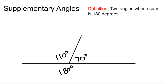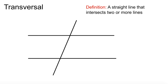Let's have a conversation about a transversal. What is a transversal? Well, a transversal is a straight line — this one here — that intersects two or more lines. So the definition is: a straight line that intersects two or more lines.